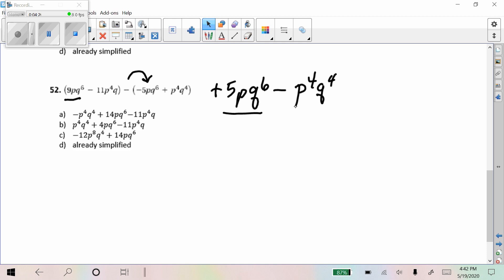And then we're going to, there's actually, there's nothing else we can combine, right? So we end up with the highest degree term is this P to the fourth Q to the fourth. That goes first. And then we have plus 14 PQ to the sixth. And then minus 11 P. So that would be A would be the correct response there.